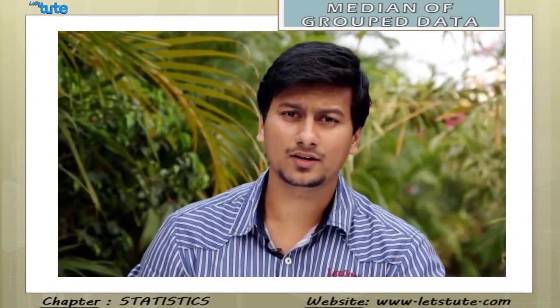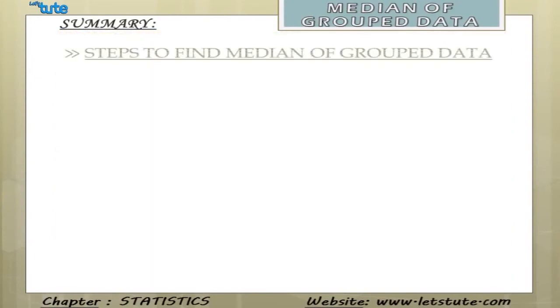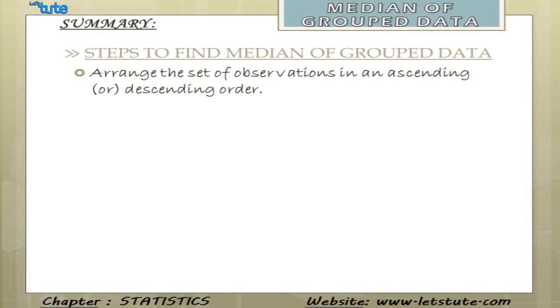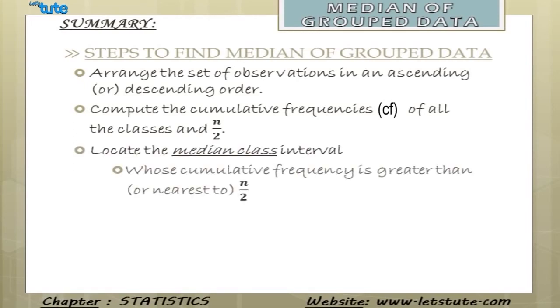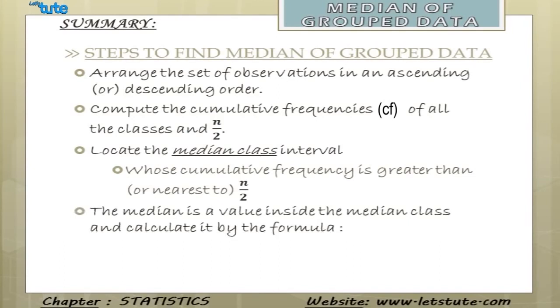Now that we have calculated median of grouped data, let us summarize all the steps involved. First, we will arrange the set of observations in an ascending or descending order. Then, we will compute the cumulative frequencies of all the classes and n by 2. Then, we will locate the median class interval. And, the median will be a value inside this median class. We will calculate it by the formula L plus N by 2 minus CF upon F multiplied by H.